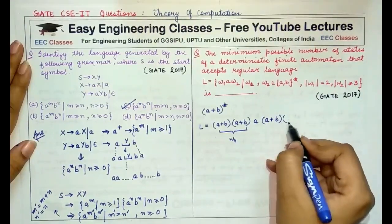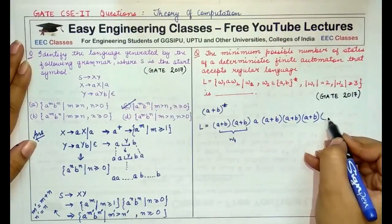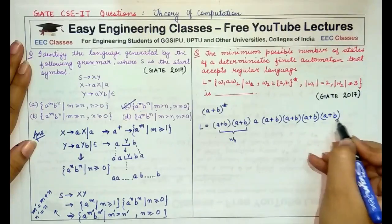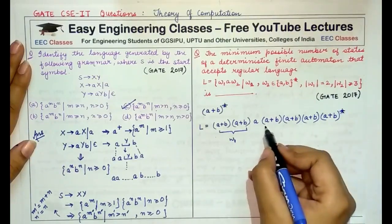So, A or B, A or B, A or B and this is the minimum, there can be more number of A's and B. So, we'll put a star here.